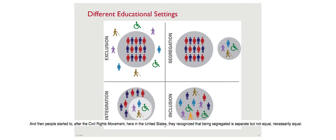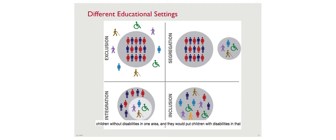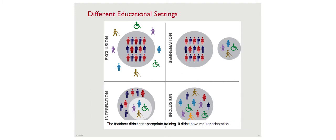After the civil rights movement in the United States, people recognized that being segregated is separate but not equal. So they developed integration - the third model - where one school would have children without disabilities in one area and place children with disabilities in that school. But the key difference between integration and inclusion is that integration just physically places kids in the school. Teachers didn't get appropriate training, materials lacked adaptations, and students didn't know how to communicate with students with disabilities.